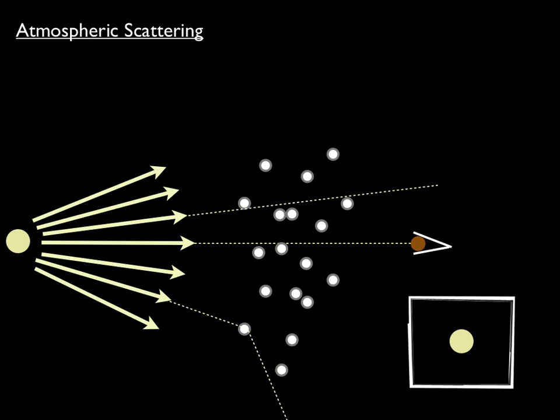Some of the photons encounter molecules in the atmosphere and are scattered. In other words, they are absorbed and re-emitted in a different direction.